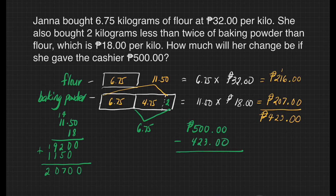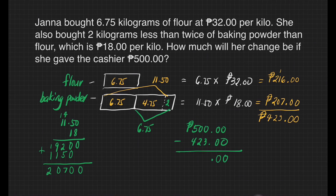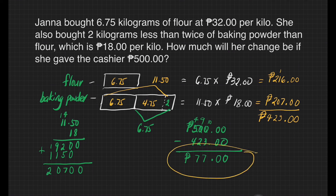Five hundred pesos minus four hundred twenty-three pesos. Zero minus zero is zero. Zero minus zero is zero. Copy the decimal point. Zero minus three cannot be done, and we cannot borrow from another zero, so we borrow from five. Five becomes four, that zero becomes nine, and the other zero becomes ten. Ten minus three is seven. Nine minus two is seven. Four minus four is zero. Janna will have a change of seventy-seven pesos after paying five hundred pesos.